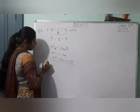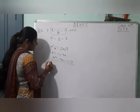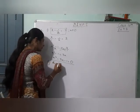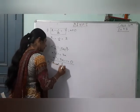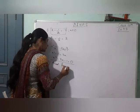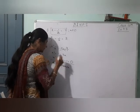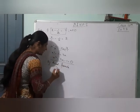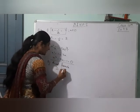So solving this equation by quadratic formula. We need to find D. D equals B square minus 4AC. We compare with Ax square plus Bx plus C.